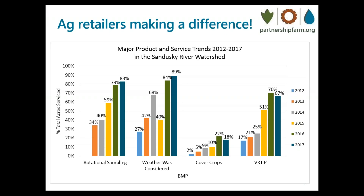We've expanded to additional watersheds in Northwest Ohio and have had more than 40 ag retailers participate. Using published estimates, acres of VRT here alone represent more than a million pounds of phosphorus prevented from leaving cropland in the watershed. We need to track and report the improvements we're making so that regulators and the public are aware of these voluntary efforts, using the power of the marketplace to drive improvements. And with that, I'd like to turn the mic back to Julia.